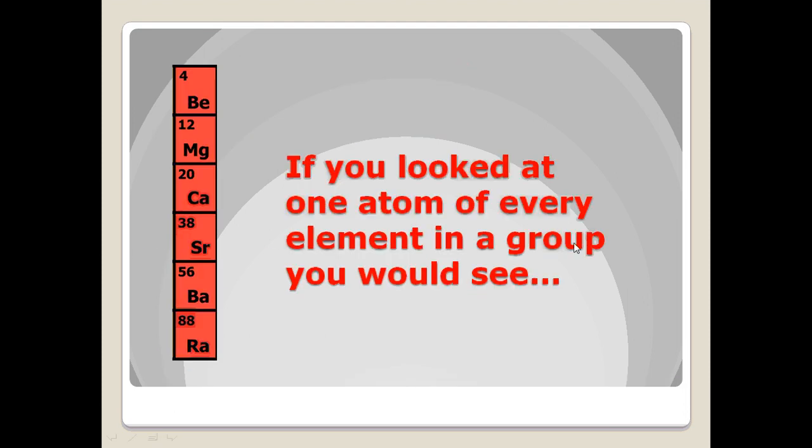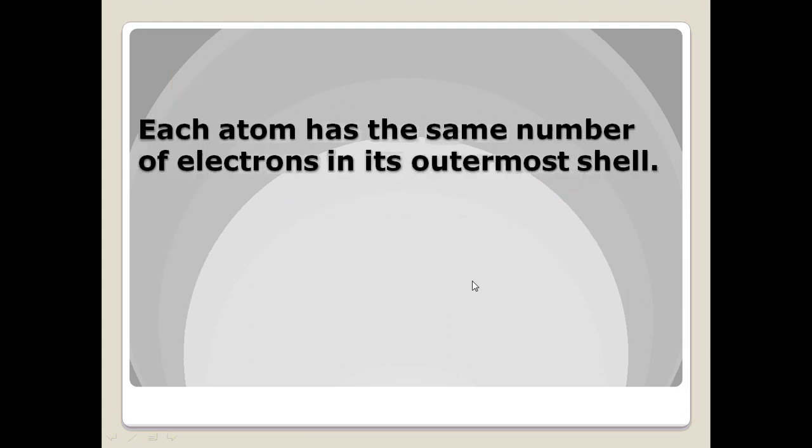If you look at any atom in group 1, all of those atoms, all of those elements, are going to have one valence electron. They're all going to have the same number in the outermost shell, and if you're in group 1, that's going to be one valence electron.